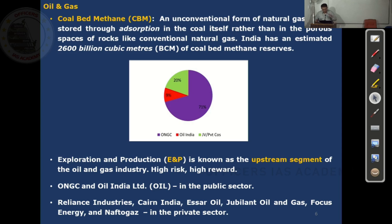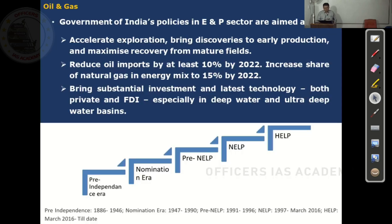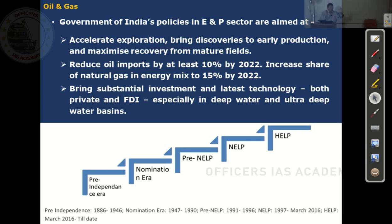In the upstream sector, ONGC and Oil India Limited are the public sector players. In the private sector: Reliance Industries, Cairn India, SR Oil, Jubilant Oil and Gas, Focus Energy, and Naftogaz. ONGC's share is 71%, Oil India is 9%, and the private sector all together accounts for 20%. So about 80% of oil exploration work is done by ONGC and OIL — the two PSUs.